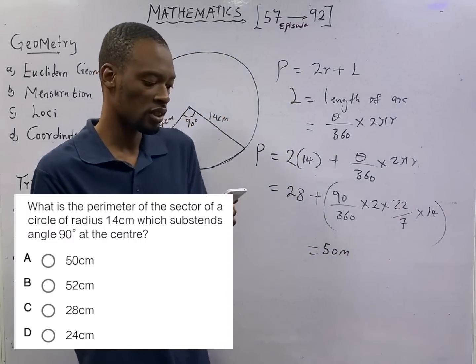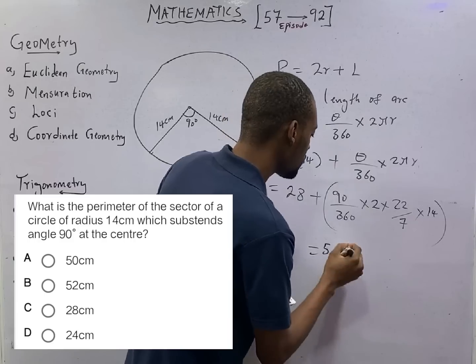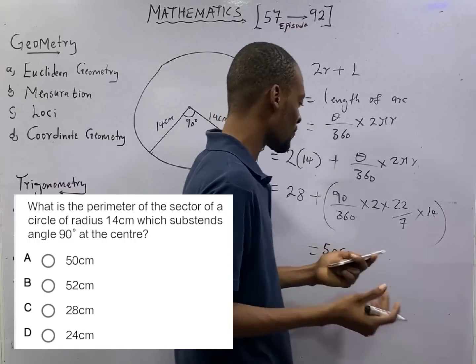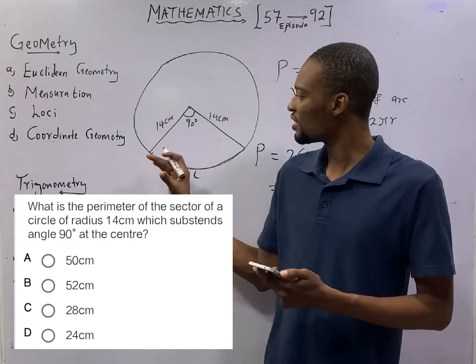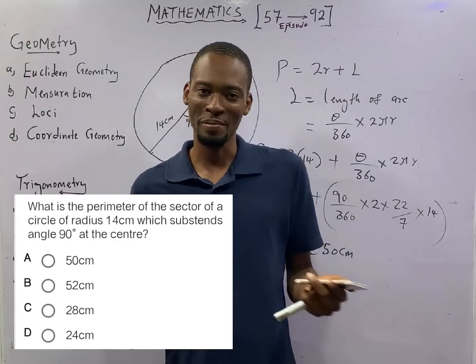That is the perimeter of this sector. And that makes option A the correct option.